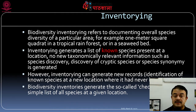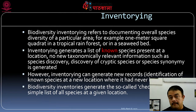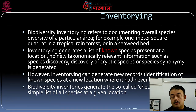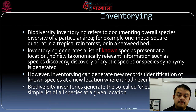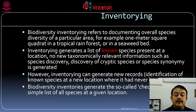However, inventory can generate new records — a previously described species that is new to a particular location. For example, Sargassum zhangii is a Chinese species described elsewhere, but the speaker's group was the first to report it from India. That constitutes a new record of an existing species. Biodiversity inventories generate the so-called checklists: simple lists of species in a given location.